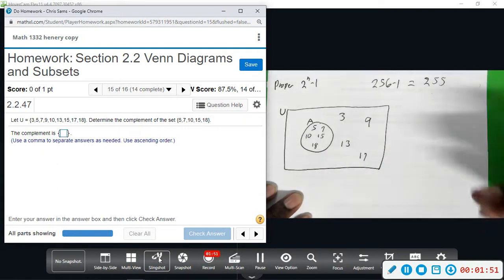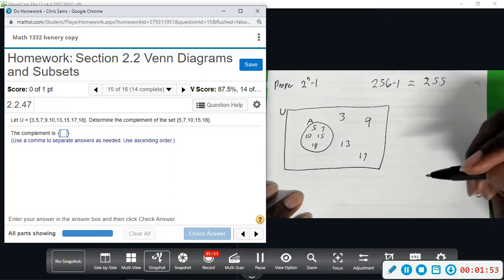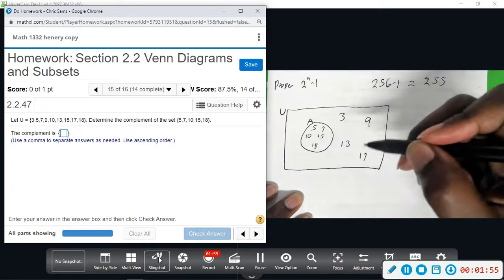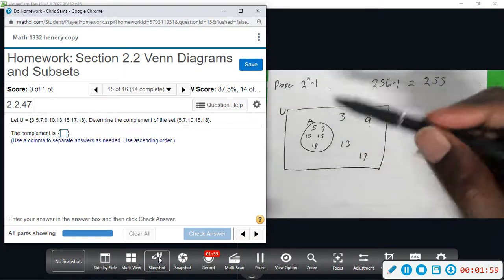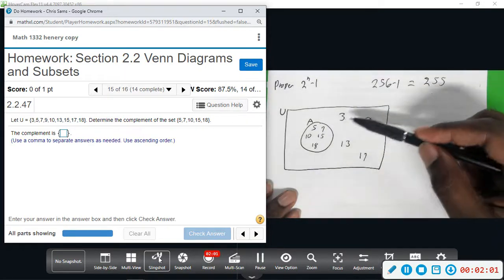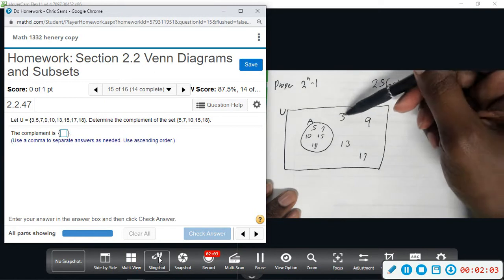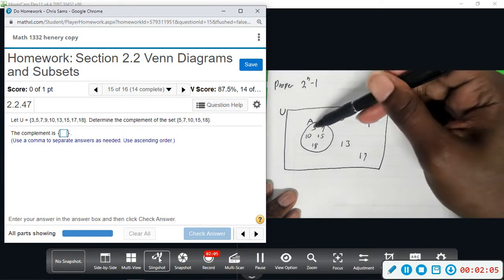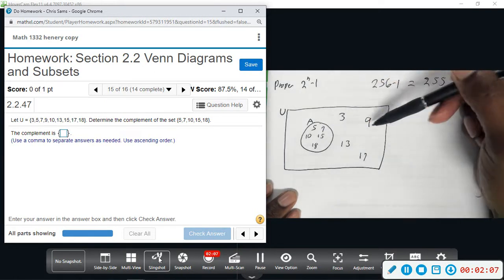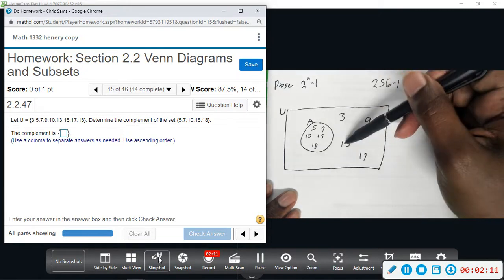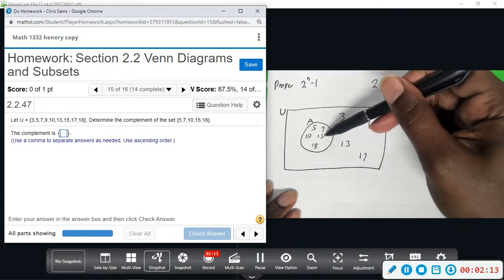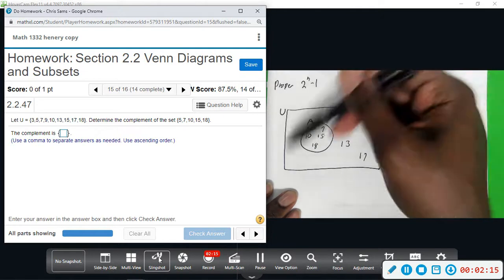Okay, so complement is everything but this, so it's going to be the opposite. So if this is a universal set, and these are all the numbers, let's make sure we got them all: 3, 5, 7, 9, 10, 13, 15, 17, 18. Okay, so we have everything here.